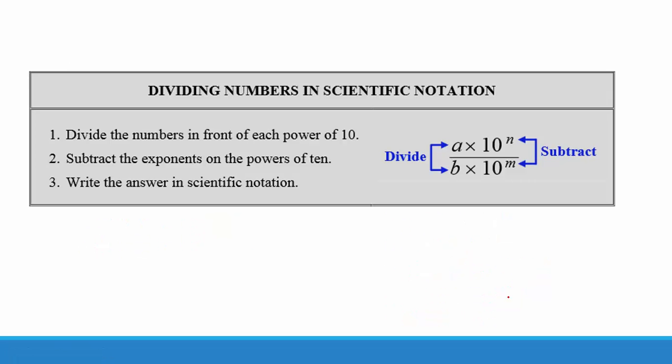When we divide numbers in scientific notation, first we will divide the numbers in front of each power of 10. Then we will subtract the exponents on the powers of 10.